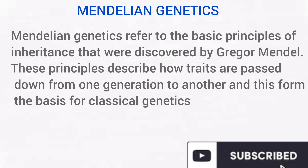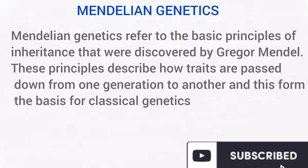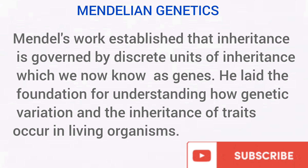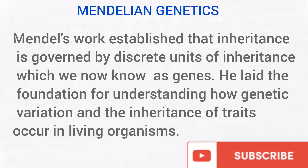Mendelian genetics refers to the basic principles of inheritance discovered by Mendel. These principles describe how traits, characters, or features are passed from one generation to another — in other words, from parents to offspring. Mendel established that inheritance is governed by a discrete unit of inheritance which he called a factor, now known as a gene. He laid the foundation for understanding how inheritance of traits and variation occur in living organisms.